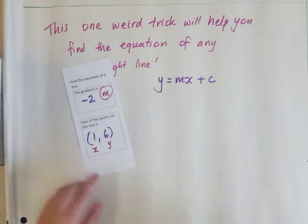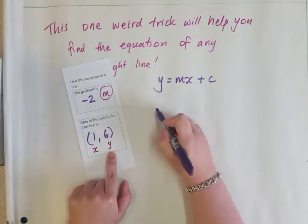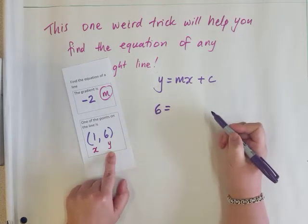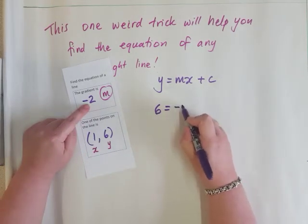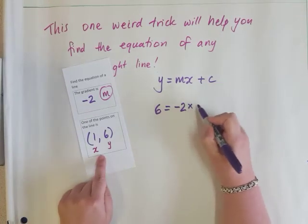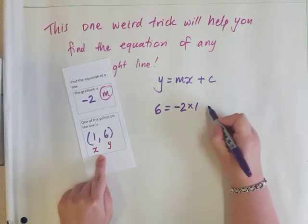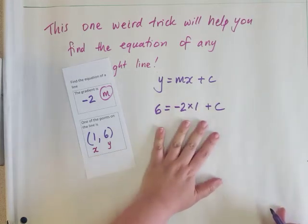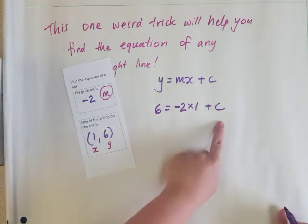Let's put the numbers in. y we said is 6, m we said is -2, x is 1 so I write multiply by 1, and then now what I have to do is find what is the value of c.